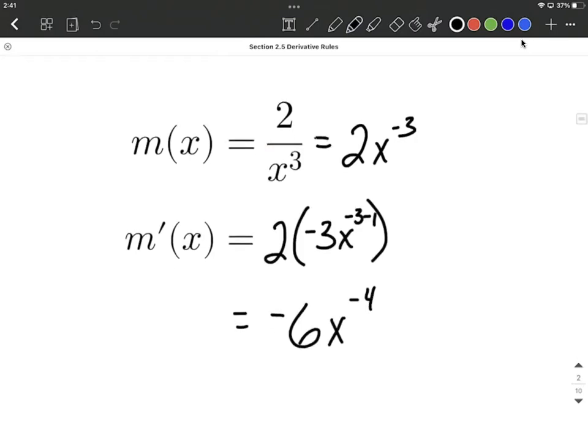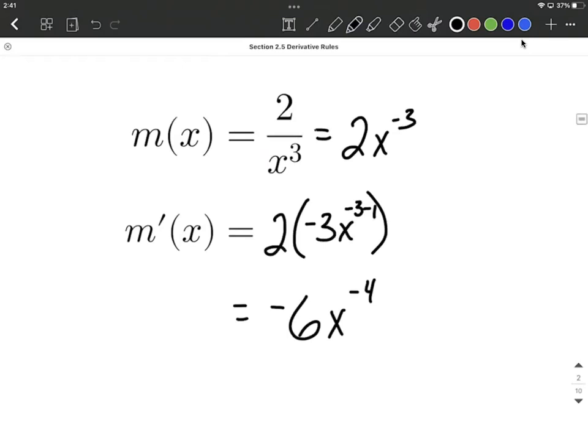Now, usually we can leave our answers as negative exponents when we're taking derivatives. However, if you want to write it with a positive exponent, negative six is going to remain up in the numerator. We can make that exponent positive by bringing it down to the denominator. But again, leaving a negative exponent when you're taking derivatives typically is just fine. Hope this helps out as you're working on getting these rules down.